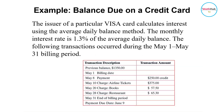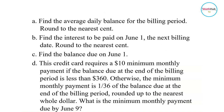Let's look at an example. The issuer of a particular Visa card calculates interest using the average daily balance method. The monthly interest rate is 1.3% of the average daily balance. The following transactions occurred during the May 1 through May 31 billing period. We will calculate the average daily balance, round it to the nearest cent, and then calculate the interest to be paid on June 1.